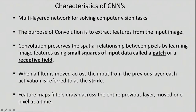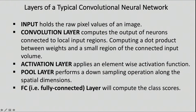CNNs are multi-layered networks for solving computer vision tasks. The purpose of a convolution is to extract features from the input image. We set up small squares as inputs — either a patch or receptive field — defined in software, and moving that across the image in a window fashion is called a stride. The typical layers are: an input layer of raw pixels, a convolution layer computing a dot product between weights and local input regions, activation functions, a pooling layer that does downsampling, and finally the fully connected layer at the end.